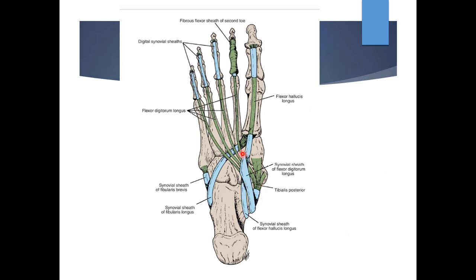In this diagram they have shown the synovial sheaths of the tendons. This is the synovial sheath of the flexor digitorum longus, this is the synovial sheath of the flexor hallucis longus, and this is the synovial sheath of the peroneus longus muscle, then the synovial sheath of the peroneus brevis muscle. There are digital synovial sheaths also, and under the digital synovial sheath there is the fibrous flexor sheath of the muscles.